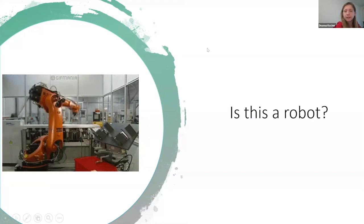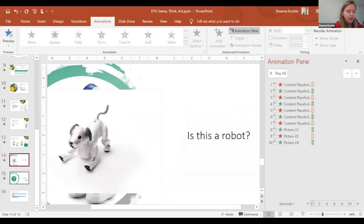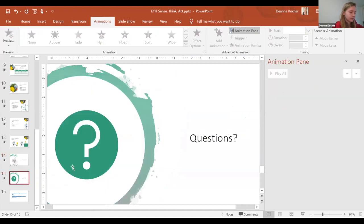We're going to skip our last two examples because we're just about out of time. If there are any questions, we can take a couple; otherwise, that's all we have for robots.